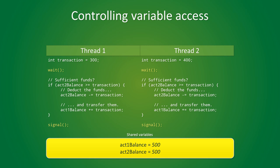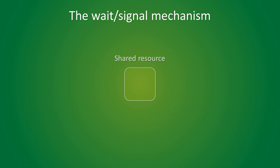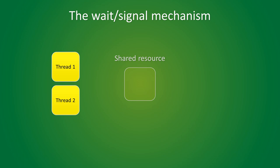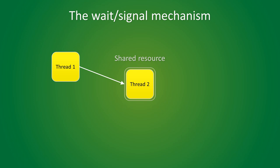You should always try to make your critical sections as small as possible. If all of your threads are constantly waiting in line to enter a critical section, then you're not going to get much of a performance boost. Here's another way to look at the wait/signal mechanism. This shared resource can only be claimed by one thread at the same time. Thread 2 makes a claim on that resource and gets access. Now, thread 1 also makes a claim on that resource, but since thread 2 is using it, it is rejected. Then, when thread 2 is done with it, it will release the resource and thread 1 will get access.